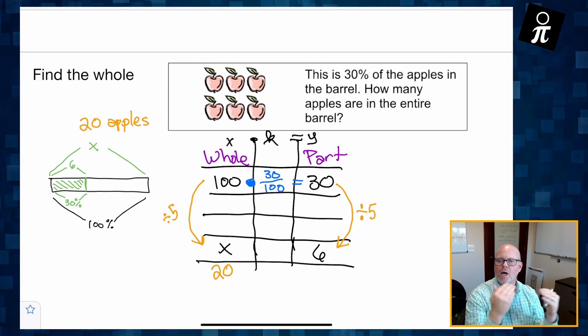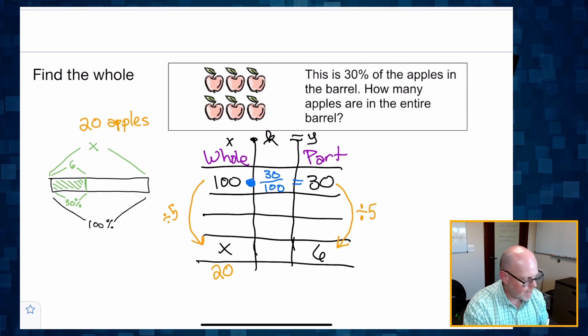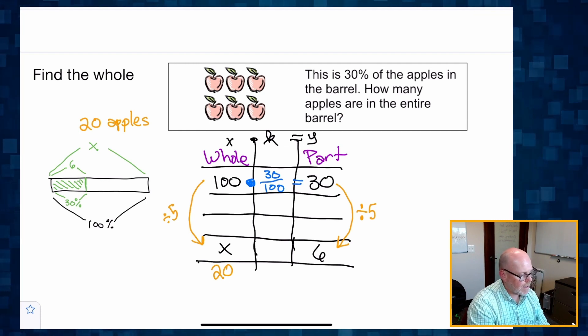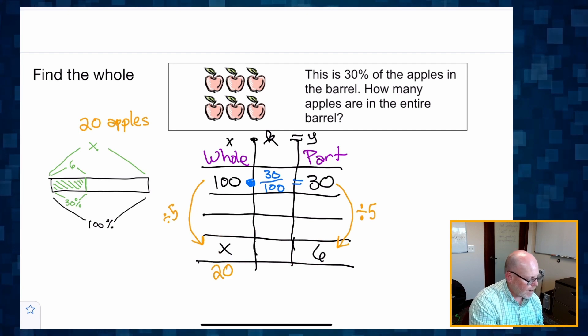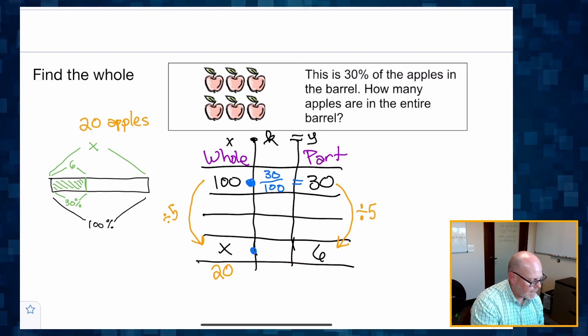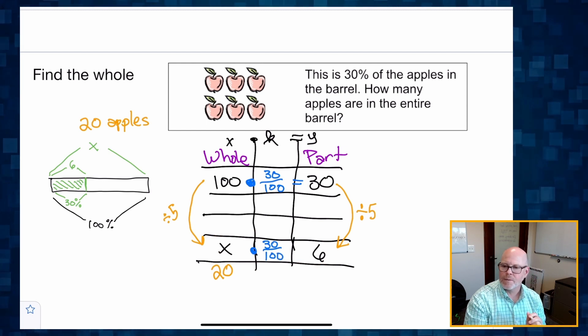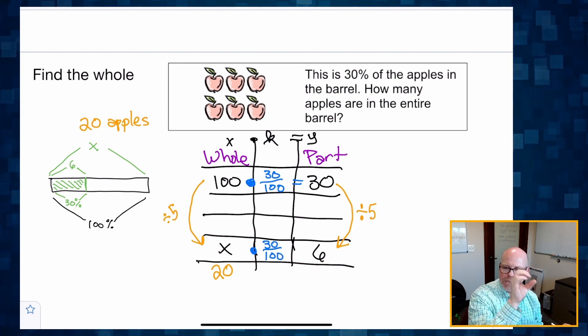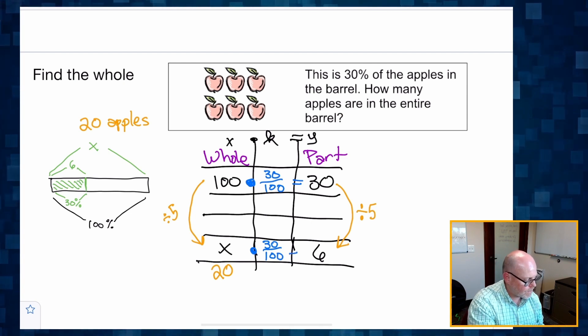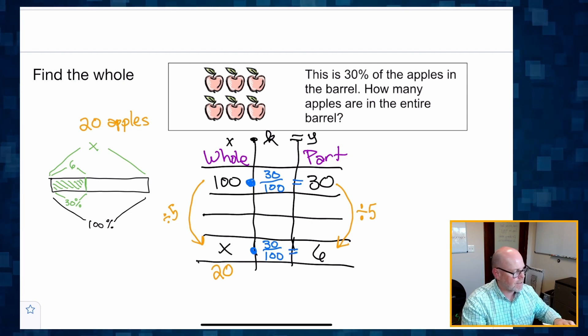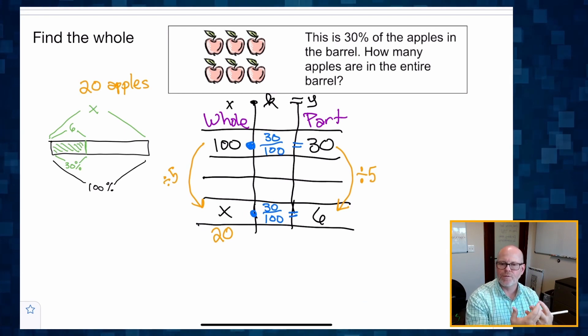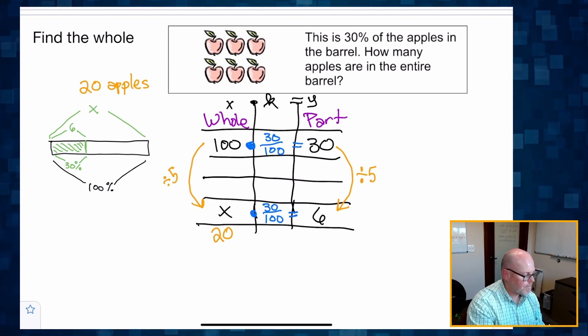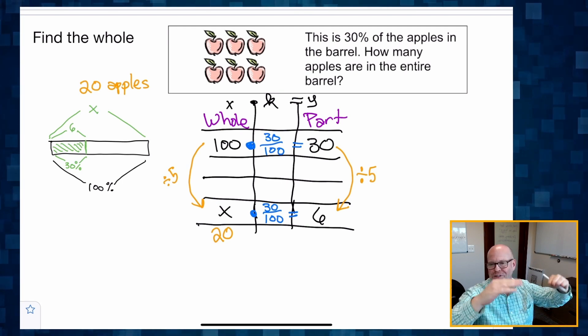So that's our constant of proportionality. And so then all we have to do is go down here and we know that our constant of proportionality has to be 30 hundredths. So this says x times 30 hundredths is equal to six. So what kind of math are we going to do to figure out the value of x?